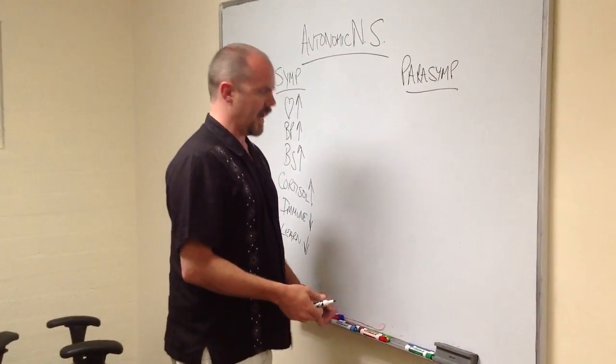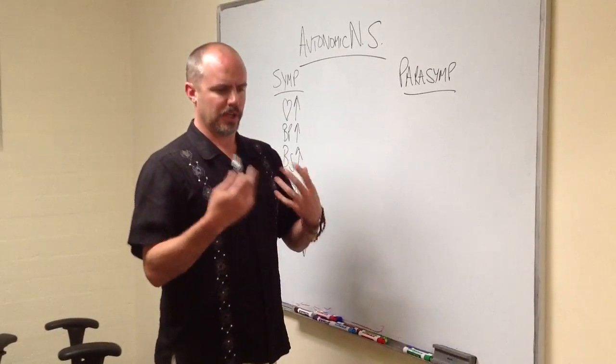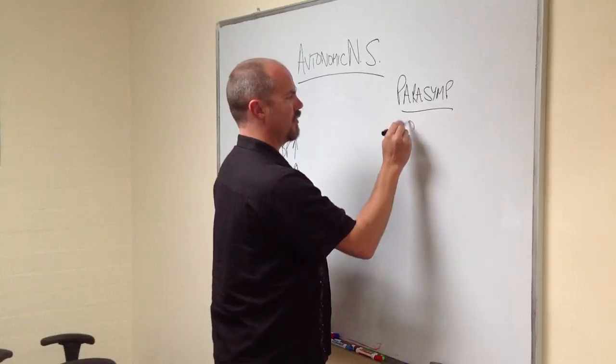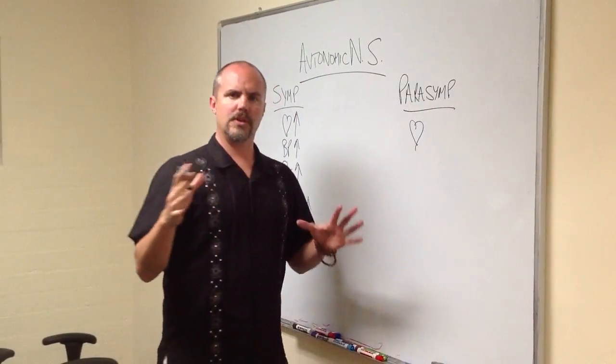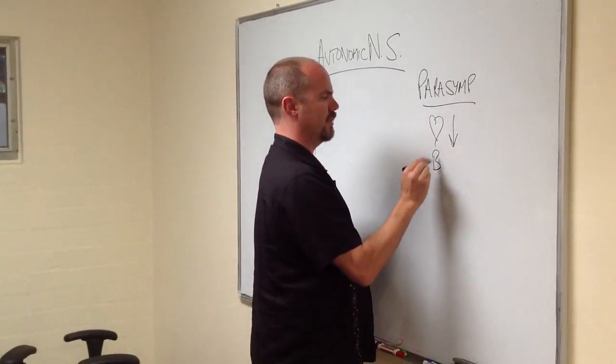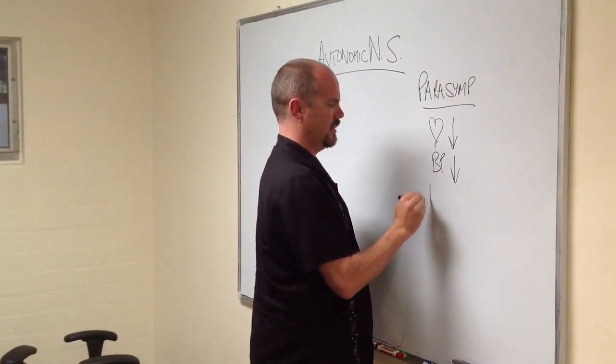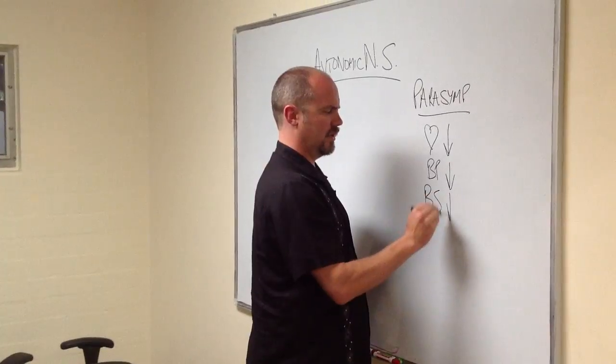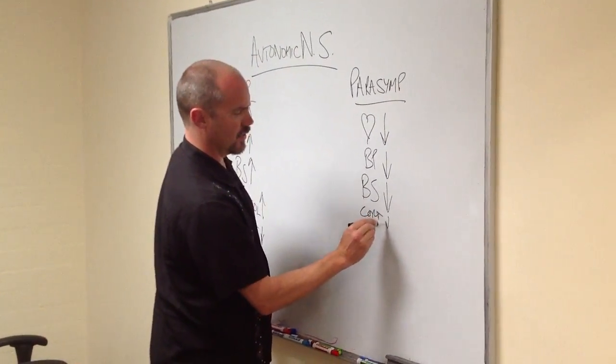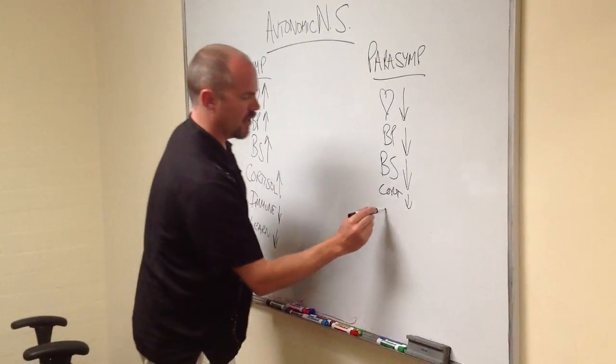So, we kill the tiger and now what's going to happen? We're relaxing, we're eating our tiger sandwich, unless we're vegetarian. So, what happens to our heart rate once we're relaxed? The heart rate goes down. What about the blood pressure? Goes down. What about blood sugar? Goes down. What about cortisol levels? Goes down.